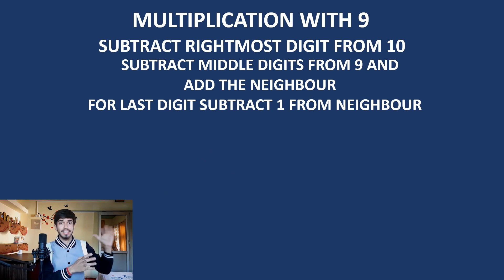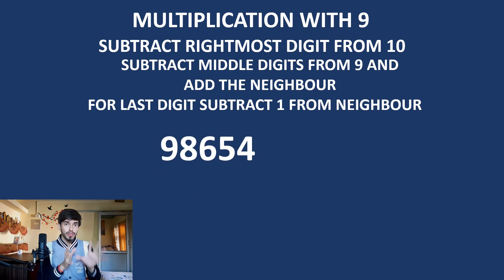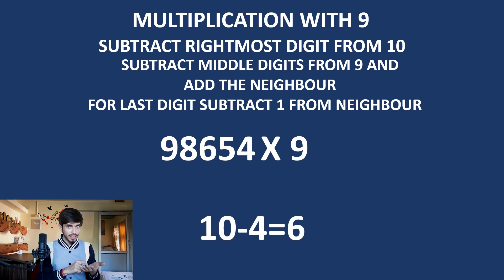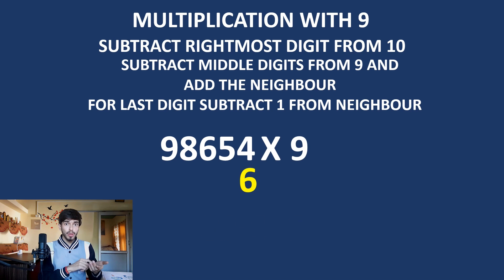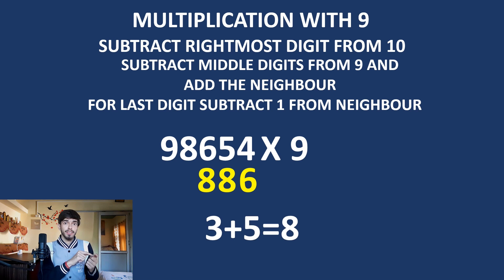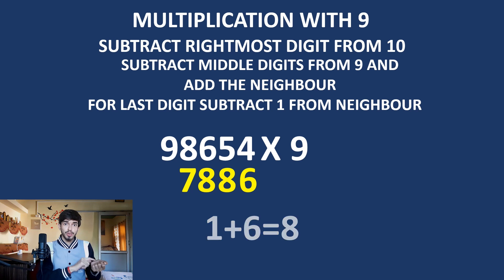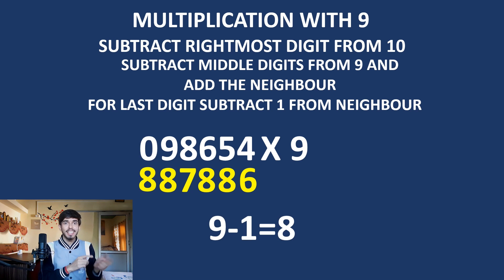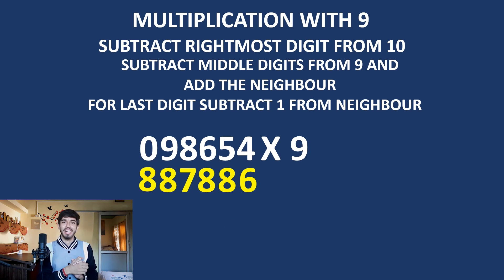Now let us try another number and do it as quickly as we can. See — 4, so 6. Next we have 5, so 4; its neighbor is 4, so 4 plus 4 = 8. We have 6, so 3 plus 5 = 8. We have 8, so 1 plus 6 = 7. We have 9, so 0 plus 8 = 8. Then subtract 1 from 9: 8. This is how quickly you can multiply with 9.